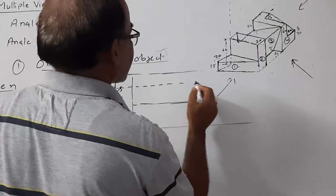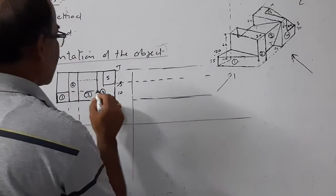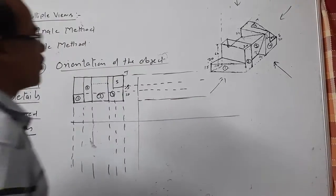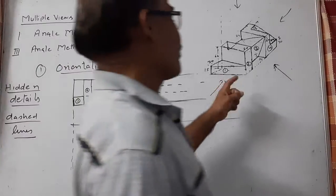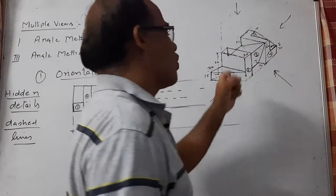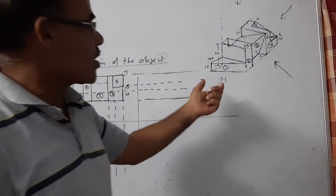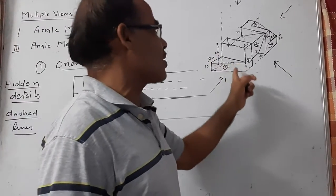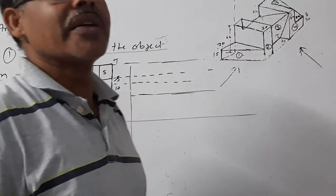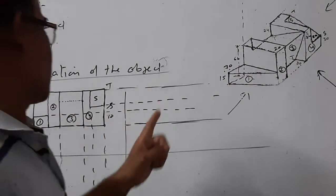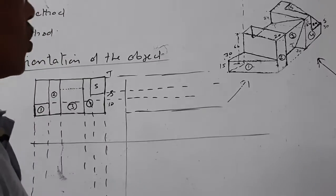Similarly, all the horizontal lines need to be projected to draw the side view. I am taking the left side view. There are two choices — right side view or left side view — but the left side view should be preferred because most of the details of this surface are visible. So I am taking the left side view.